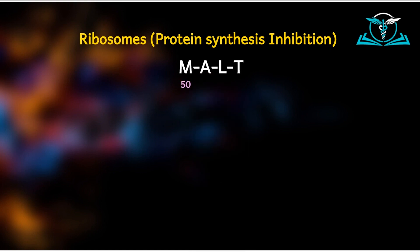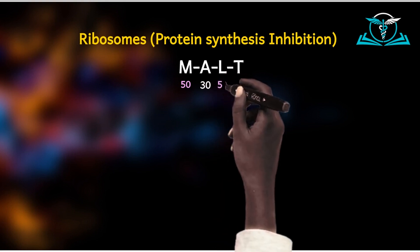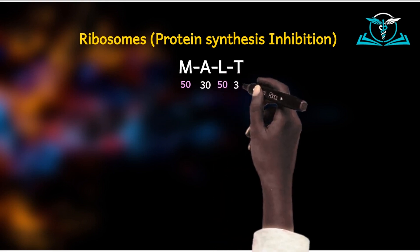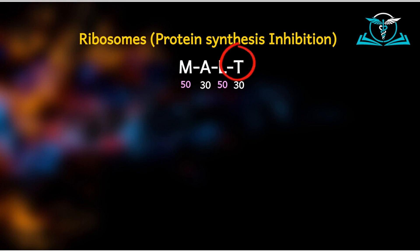Easy peasy. Using the mnemonic order: 50, 30, 50, 30. That is all. It means that macrolides and lincosamides target the 50S subunit, while the aminoglycosides and the tetracyclines target the 30S subunit.